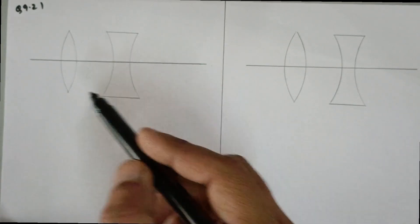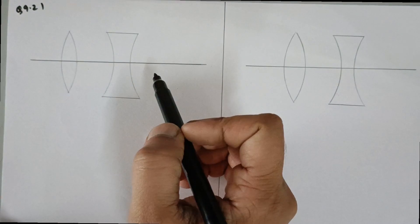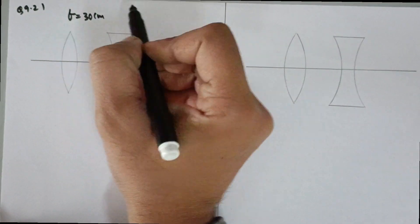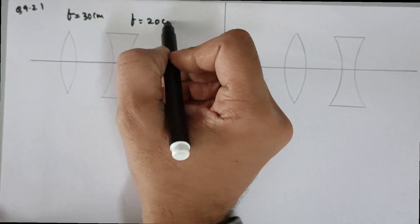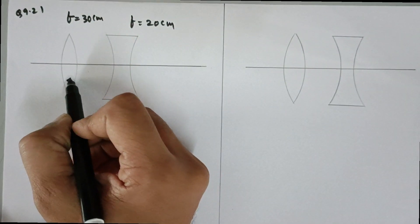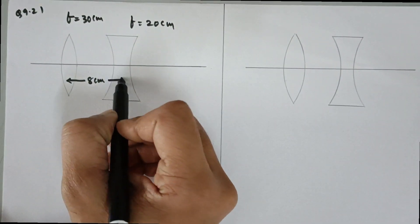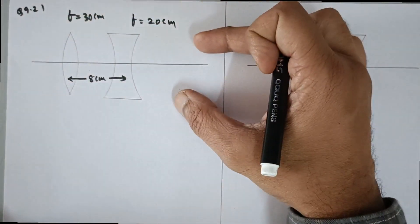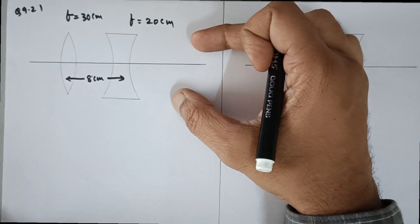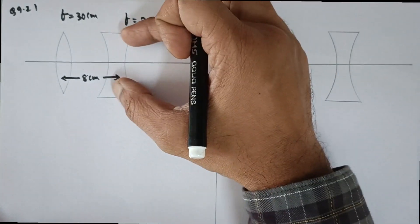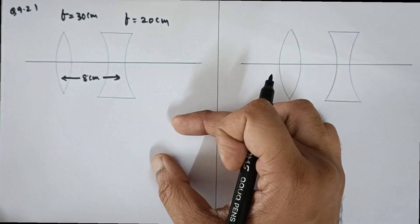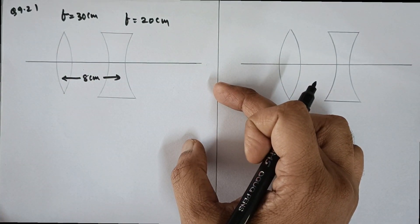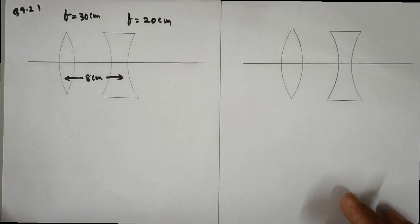We are given two lenses, concave and convex, and their focal lengths are 30 cm and 20 cm. The gap between these two lenses is 8 cm. We are asked: if you pass light from one side and find the final image distance, and then pass light from the other side and find the final image distance, would those two image distances be the same or not? That is what we are supposed to verify.